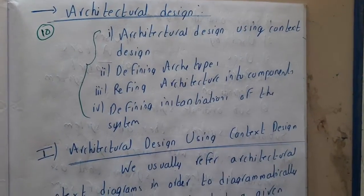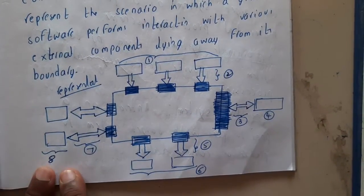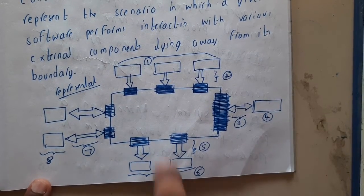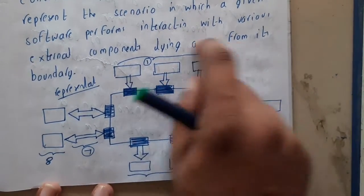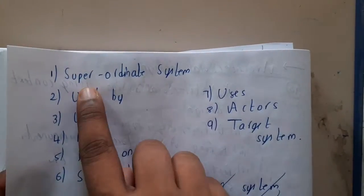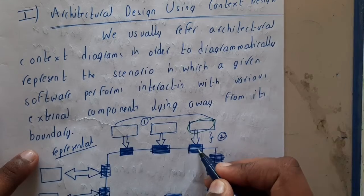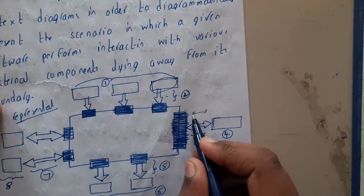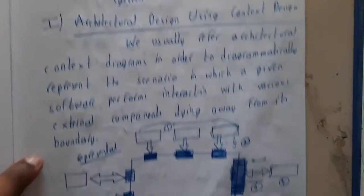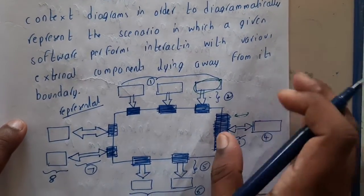If you take the representation it will be in this way — these are the common representations. The top layer is called super-oriented systems. This component uses another, so that relationship is called 'uses.' Similarly, a dual-direction arrow means one uses the other, and that's why it is called 'uses.' On the right side you'll be writing 'peers' — on four directions you'll write four different things.